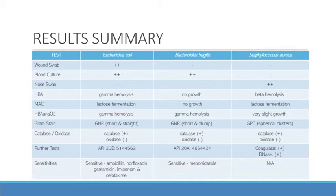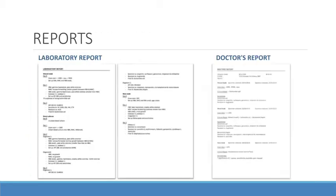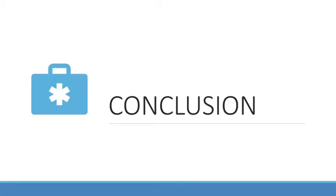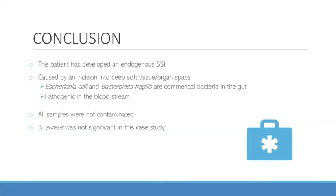All results were obtained during the identification process and were written up in a lab report, summarised into a doctor's report. Considering all of this information, we can confirm that the patient has developed an endogenous surgical site infection, caused by an incision into either the deep soft tissue or the organ space during surgery. From the blood and wound swabs, Bacteroides fragilis and Escherichia coli — both commensal bacteria in the gut — entered the bloodstream, becoming pathogenic and infecting the surgical site. The nose swab was taken as Staphylococcus aureus is often a cause of SSIs, but as it was not isolated from the wound, it is not useful and no further testing should be done with this sample.